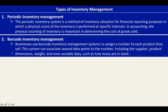The second type is barcode inventory management. Businesses use barcode inventory management systems to assign a number to each product they sell. This system can associate several data points to the number, including the supplier, product dimensions, weight, and even variable data such as how many are in stock.